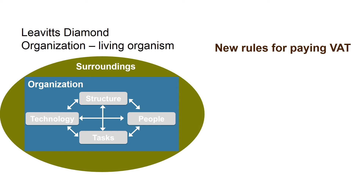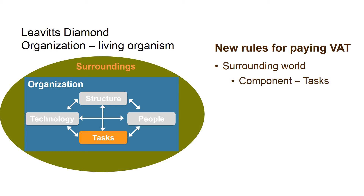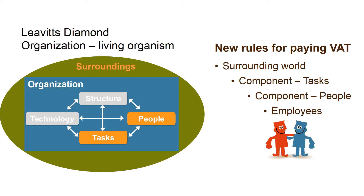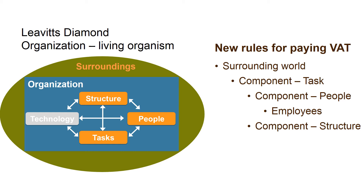New rules for paying VAT come from the surrounding world, and at first they affect the component Tasks, as this is changed. This affects the component People, since the employees must familiarize themselves with the new rules. And it will probably affect the component Structure as well, as there will be new work processes.